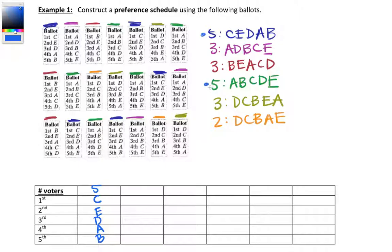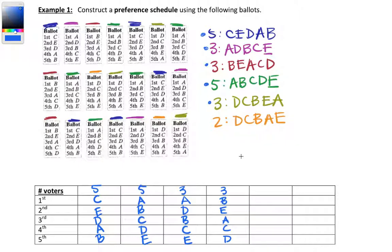The next most is also five voters who ranked A, B, C, D, E. It doesn't matter which five goes first, just that both appear in the first two columns. Moving to our threes: three voters ranked A, D, B, C, E. Three voters ranked B, E, A, C, D. Three voters ranked D, C, B, E, A. And finally two voters ranked D, C, B, A, E. This is our completed preference schedule.